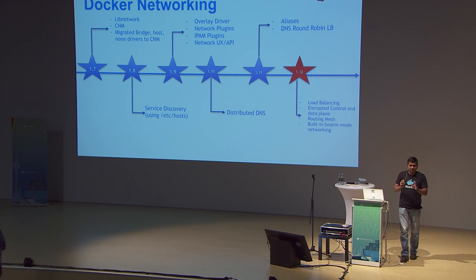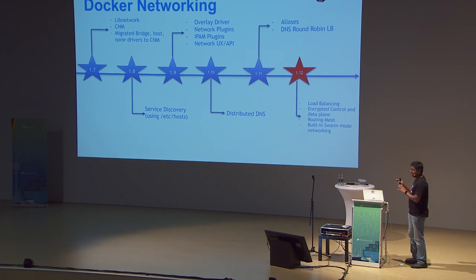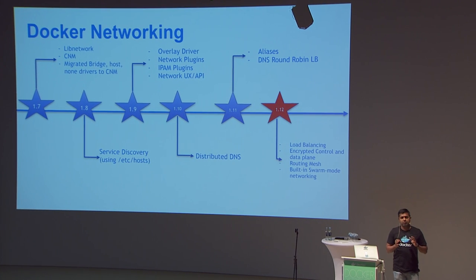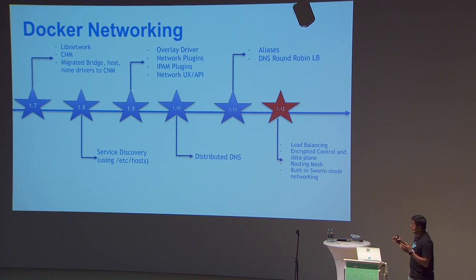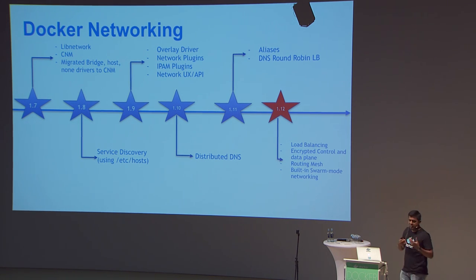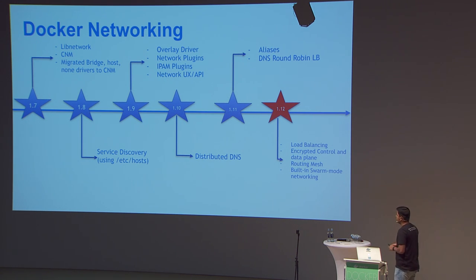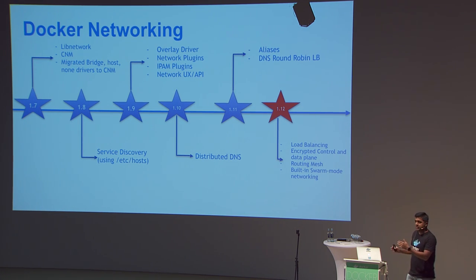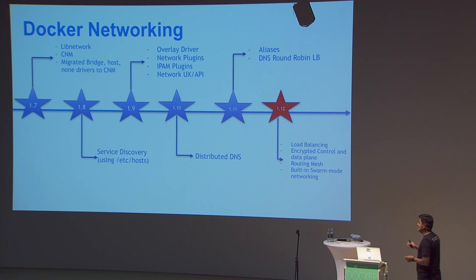I promise this is the only slide that is kind of markety — after this it's going to be completely technical. This slide explains what features we have added from Docker 1.7, which is when we joined Docker, up to Docker 1.12, the latest release with Swarm mode. Each item here can easily be categorized under control plane, data plane, or management plane — it's important to highlight that so we understand why networking is complex.